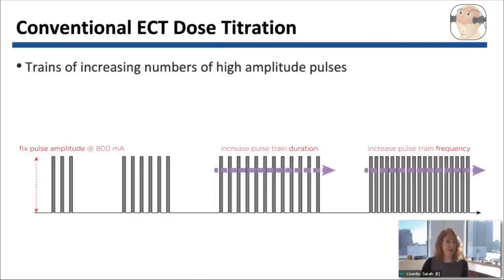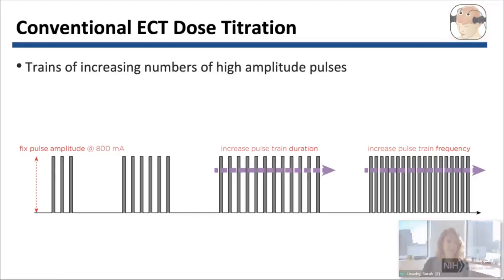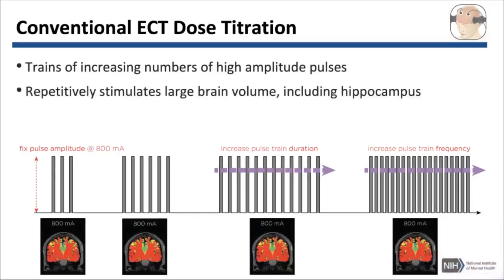Another problem with conventional ECT is the way we individualize the dose. This is called a dose titration procedure, where we give trains of stimuli of increasing numbers, but all of the stimuli are of a high amplitude that's really stimulating the entire brain. This results in repeatedly or tetanically stimulating whole brain regions with increasing frequencies and train durations.